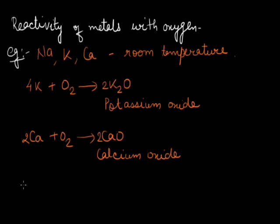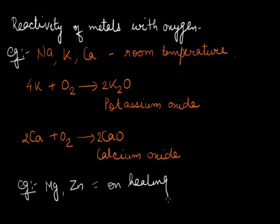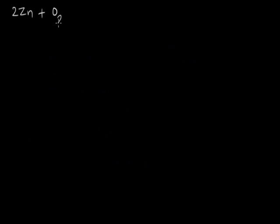Metals like magnesium and zinc do not react with oxygen at room temperature; they burn in air only on strong heating to form their corresponding oxides. Considering the example of zinc: zinc reacts with oxygen to form zinc oxide, ZnO, and heat must be supplied for this reaction.